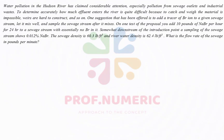To determine accurately how much effluent enters the river is quite difficult, because catching and weighing the material is impossible, weirs are hard to construct, and so on. One suggestion that has been offered is to add a tracer of sodium bromate to a given sewage system, let it mix well, and sample the sewage stream after it mixes.